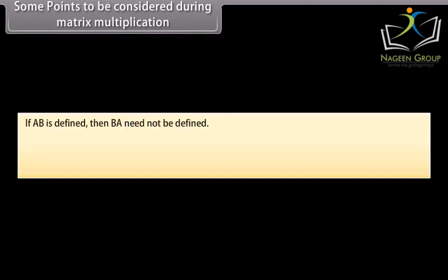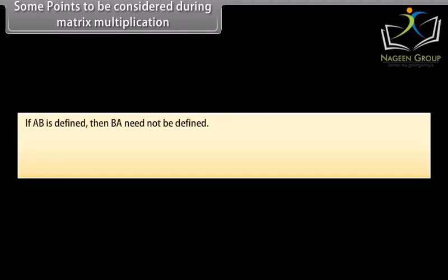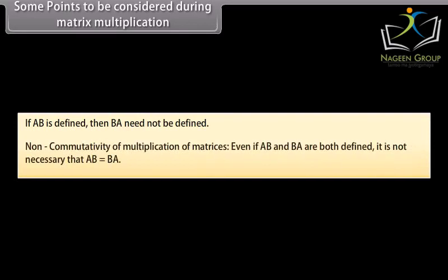Some points to consider during matrix multiplication. If AB is defined, then BA need not be defined — this is the non-commutativity of multiplication of matrices. Even if both AB and BA are defined, it is not necessary that AB equals BA.